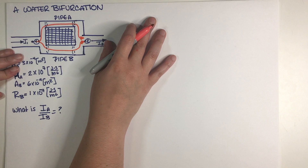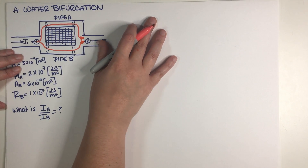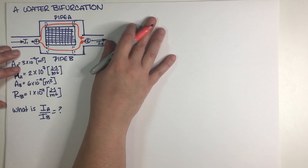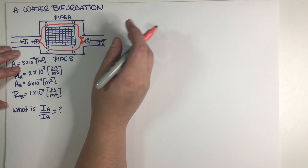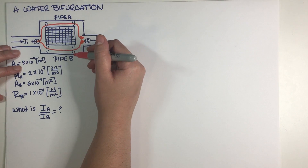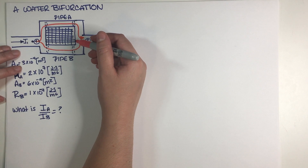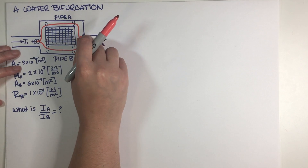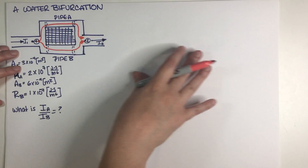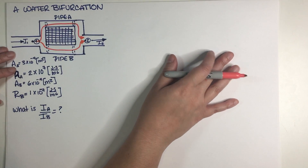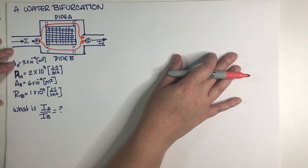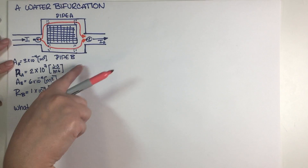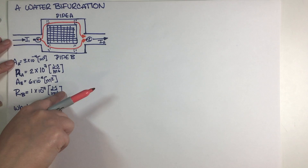A lot of people on this quiz — and I graded this quiz so I know what happened — just straight up said: well, if the current splits, surely it's half and half, 50-50, so the ratio equals one. Problem solved. Maybe under some circumstances that might be true, but certainly not under these circumstances.